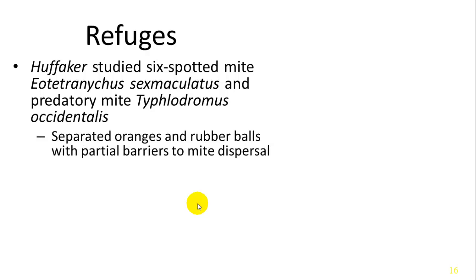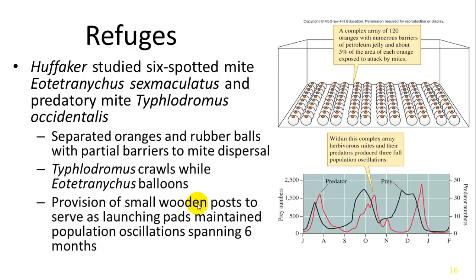The mites could travel between the smaller mites and the predatory mites could travel and eat them in large spaces. When Huffaker added small wooden posts on top of the oranges, these served as launching pads so the smaller mites could balloon — disperse to different areas and escape their predator. When this refuge was added, they found the dynamic they were looking for where predator and prey populations were closely connected.